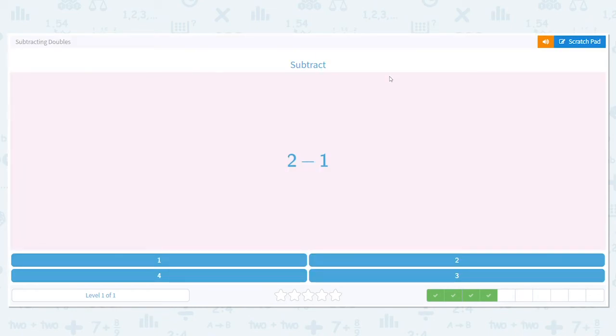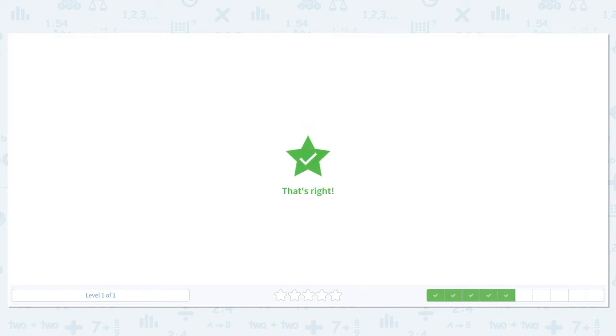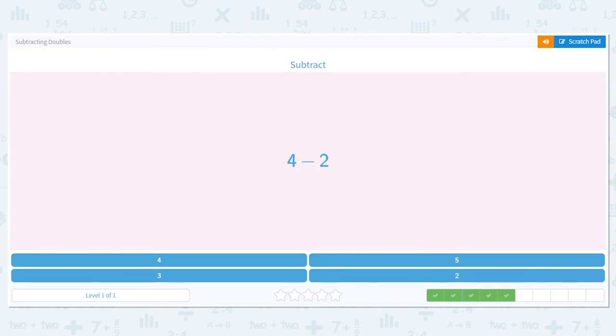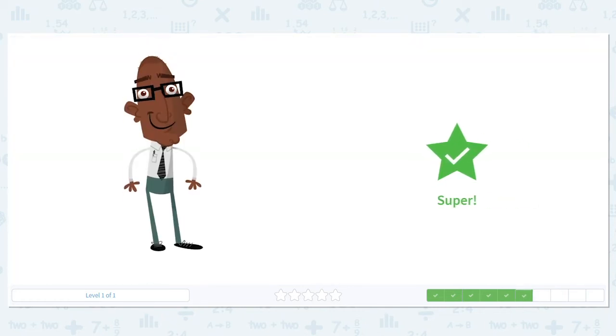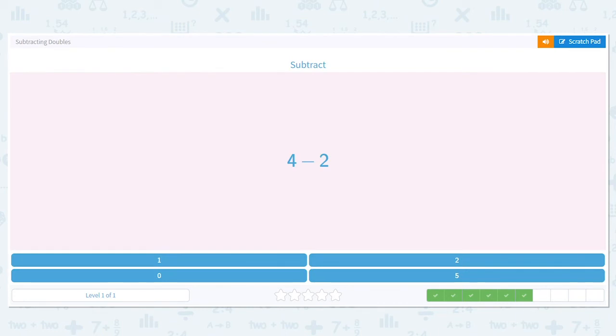2 minus 1, we know 2 minus 1 equals 1. 4 minus 2: 1, 2, 3, 4. Subtract 2. What do I have left? 2. So 4 minus 2 equals 2.